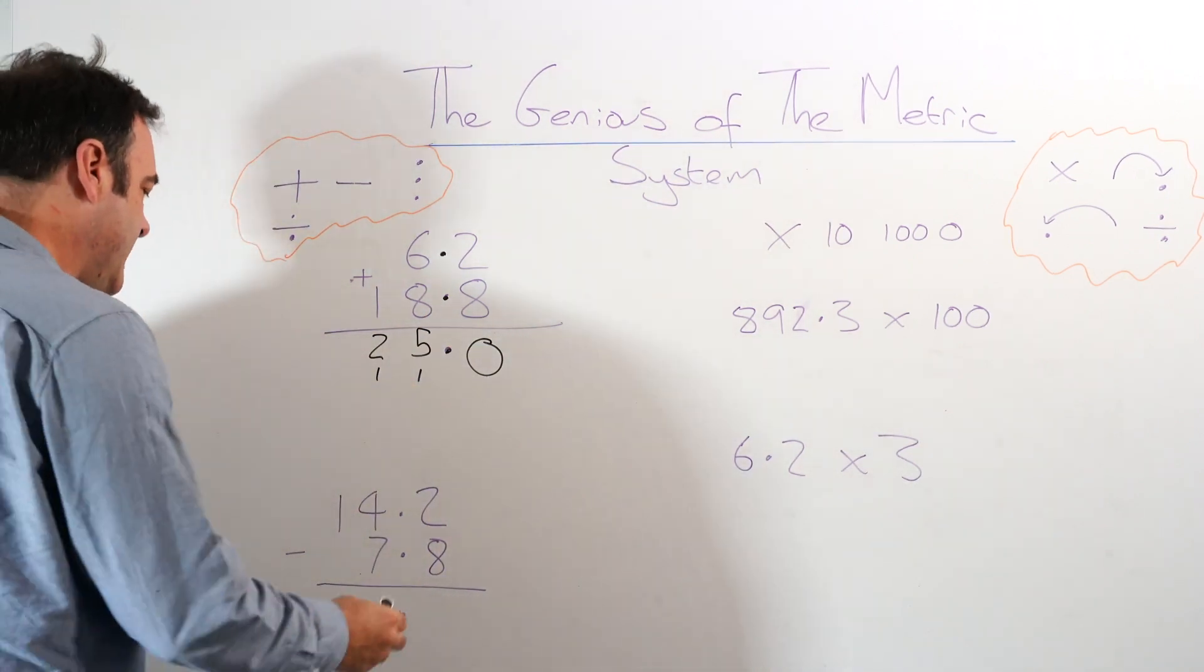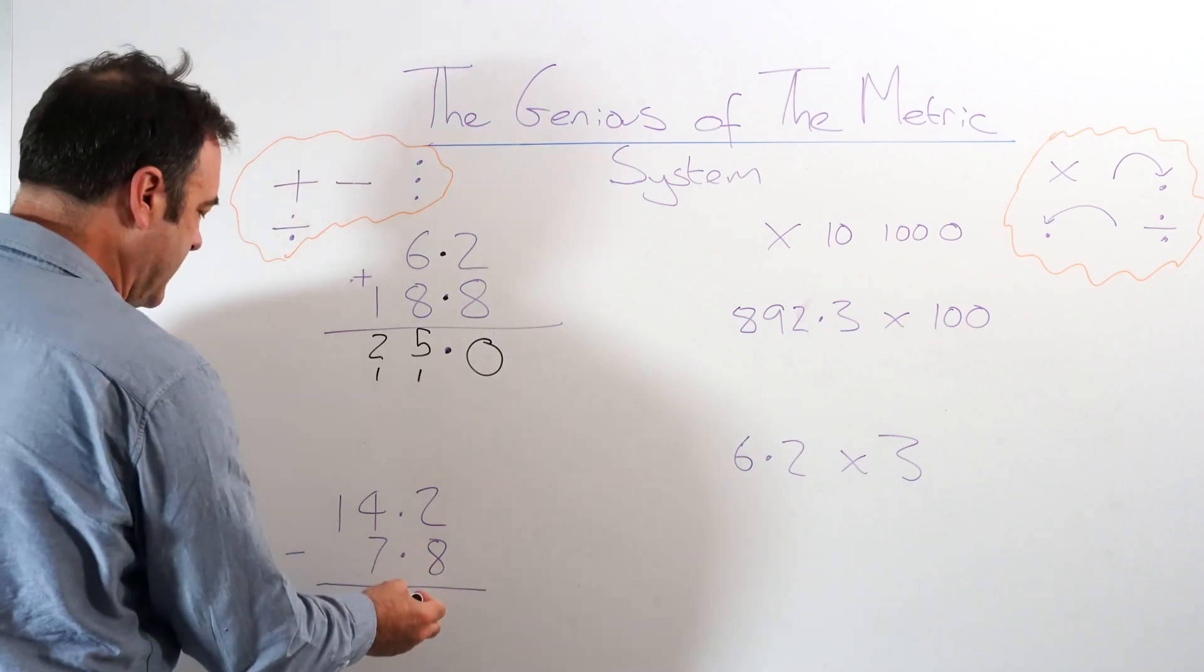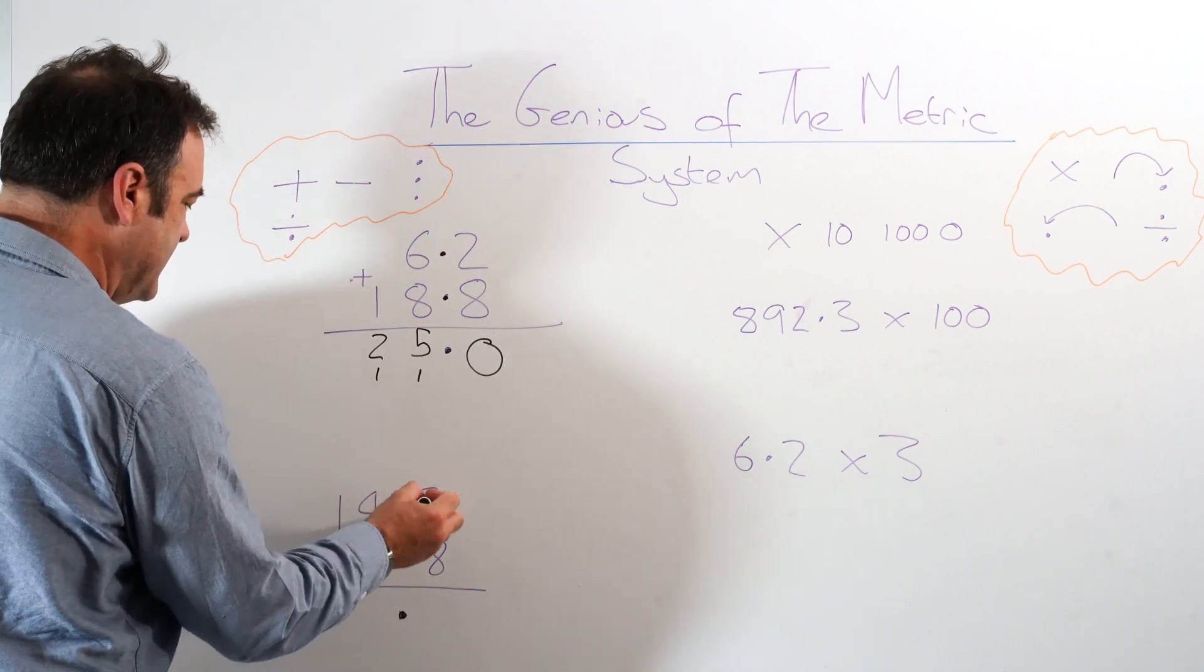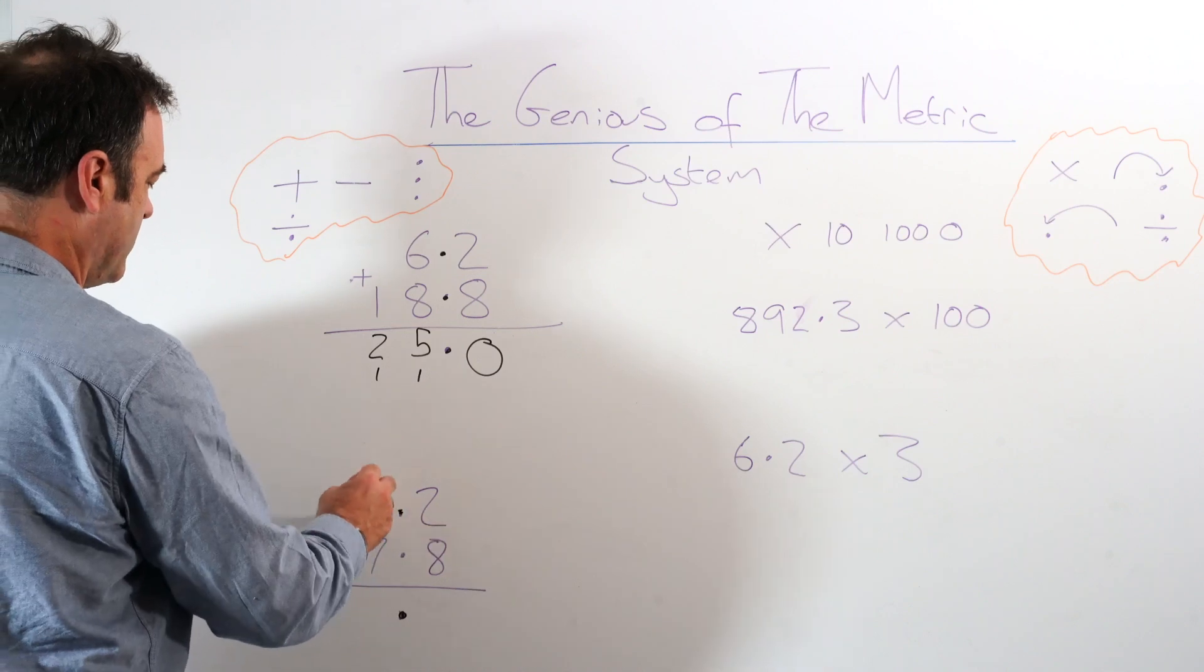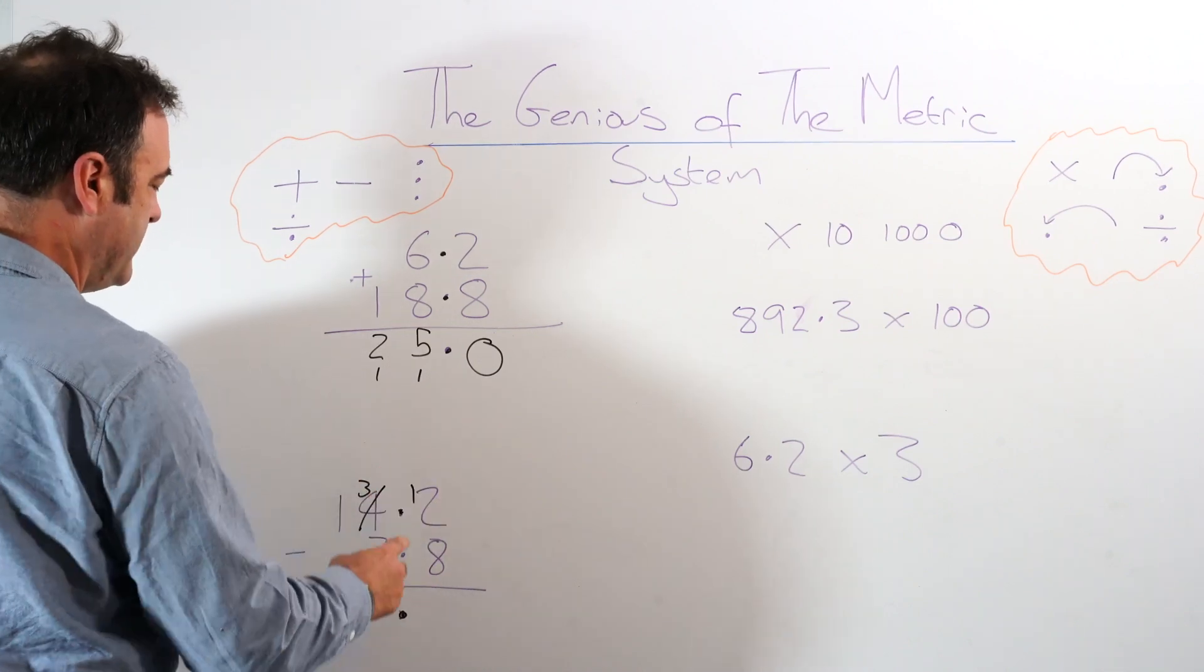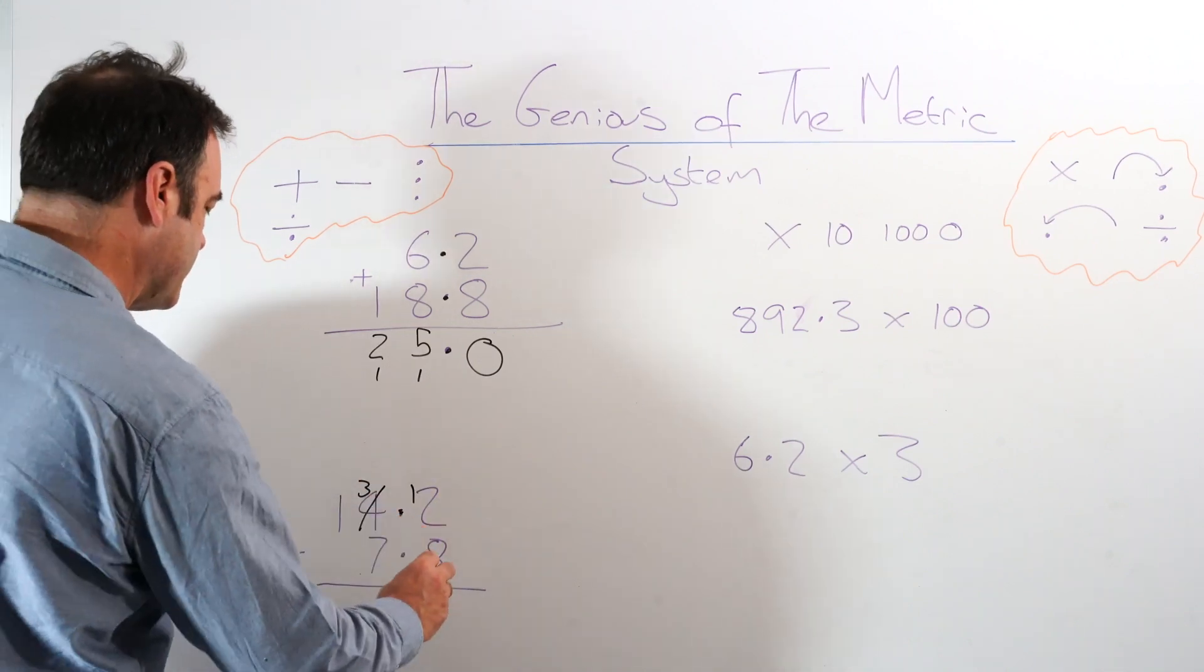For this one, we've got some exchanging to do. Still line it up using the dots. This number should always be bigger than this one. So what we need to do in fact here is borrow one from here, take it to here, put it next to this number. That becomes 4.